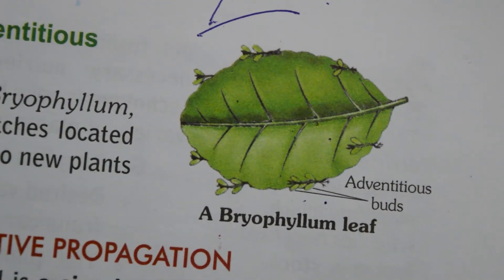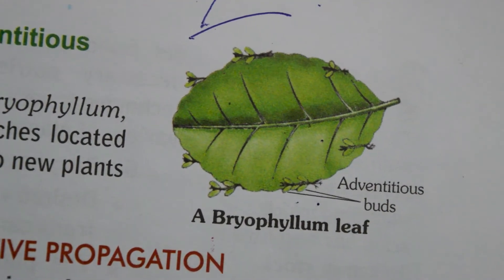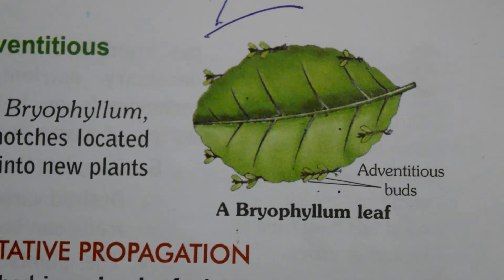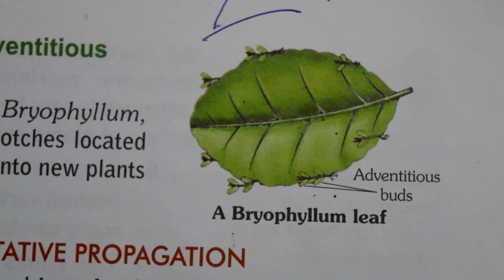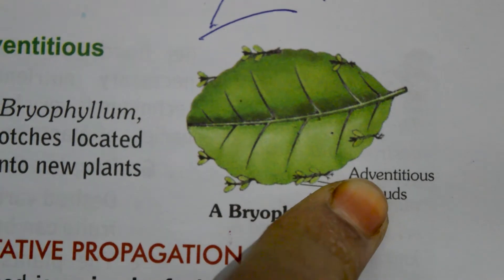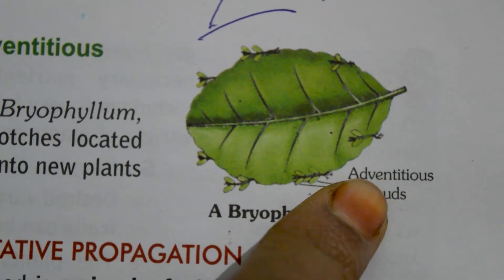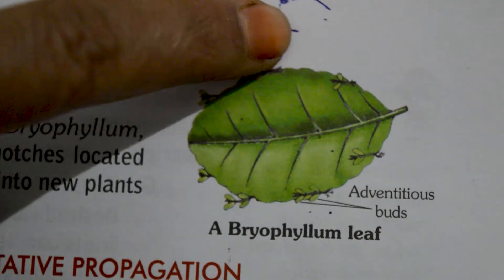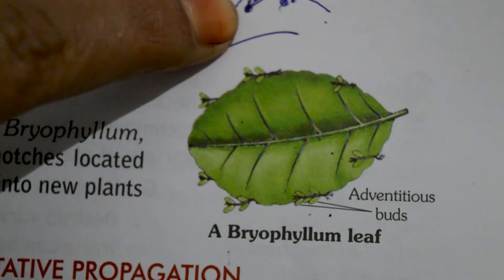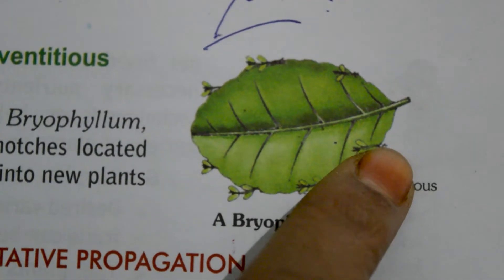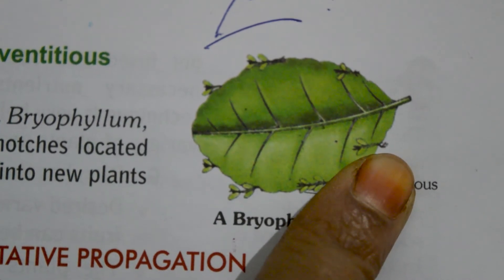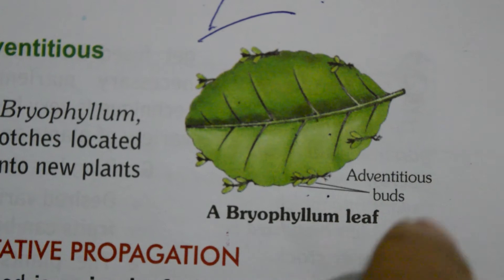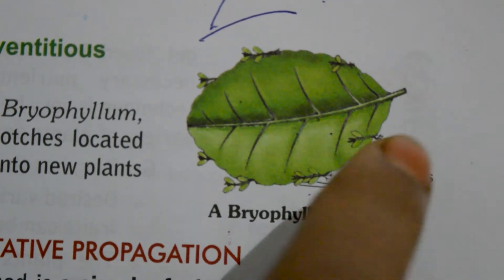Now, vegetative reproduction by adventitious buds on leaves. This method is seen in the bryophyllum leaf, which contains adventitious buds in their notches. You can observe these notches on the leaf margins, and these buds develop into new plants when they grow.